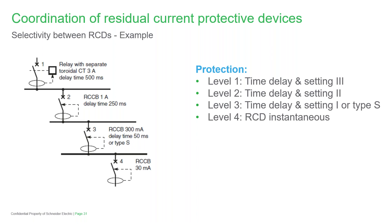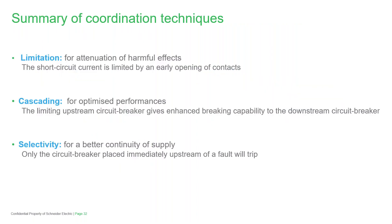To close off, a summary of the main points: Limitation is applied for the attenuation of harmful effects, where the short circuit current is limited by an early opening of contacts. The cascading technique is used to optimise your system, where the limiting upstream circuit breaker gives enhanced breaking capability to the downstream circuit breaker. And finally, selectivity is used for better continuity of supply — only the circuit breaker placed immediately upstream of a fault will trip.